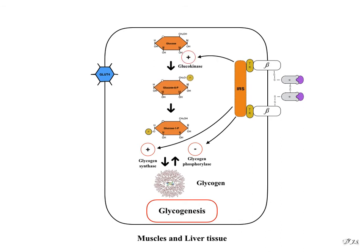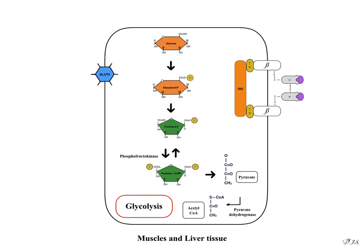This facilitation is mediated by the insulin-sensitive glucokinase. Glycolysis is stimulated by insulin-induced activation of pyruvate dehydrogenase and phosphofructokinase in muscle and liver tissue.